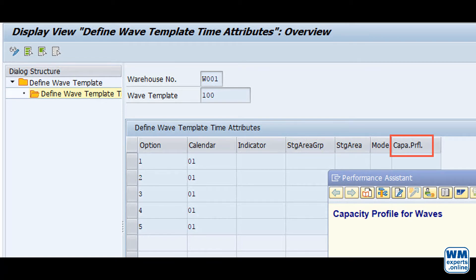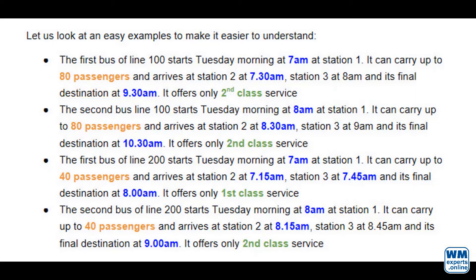Let us look at a simple example to make it easier to understand. The first bus of line 100 starts Tuesday morning at 7 am at station 1. It can carry up to 80 passengers and arrives at station 2 at 7:30 am, station 3 at 8 am, and its final destination at 9:30 am. It offers only second class service. The second bus of line 100 starts Tuesday morning at 8 am at station 1. It can carry up to 80 passengers and offers only second class service as well.